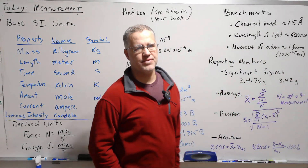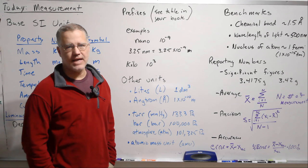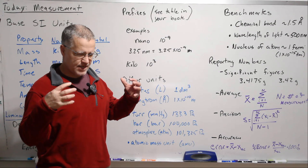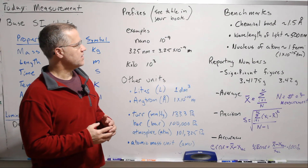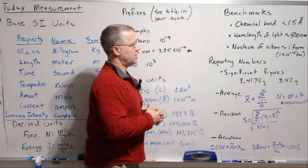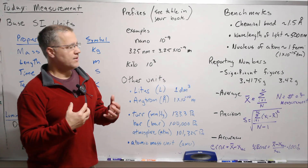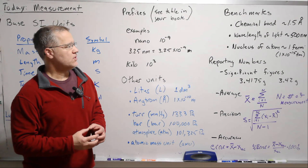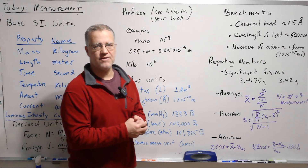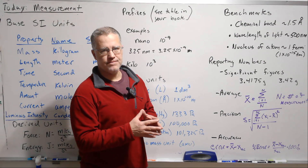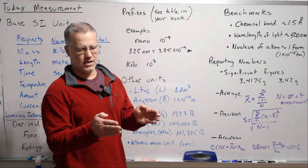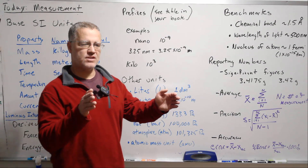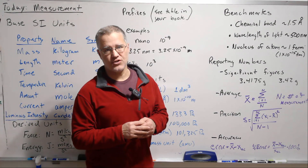It's good to start with some benchmarks and think about relative sizes of things. When talking about chemistry, you're usually talking about chemical bonds, which are on the order of an angstrom. A typical single bond is about an angstrom and a half; double and triple bonds are shorter. So lengths of about an angstrom characterize a molecule. A long fatty acid with 10 bonds would be about 10 angstroms, or about one nanometer.